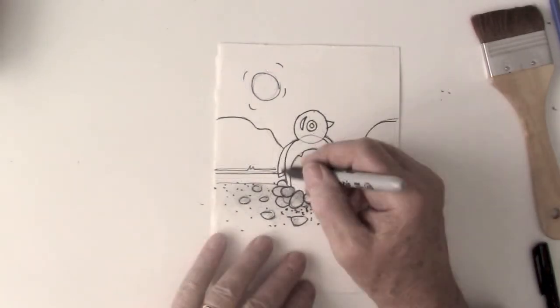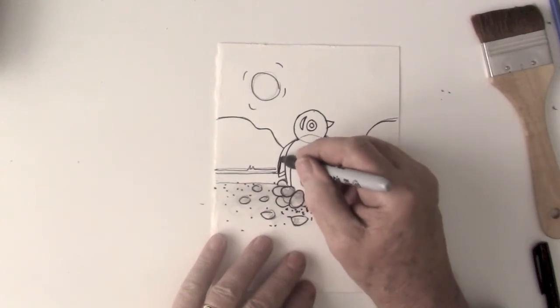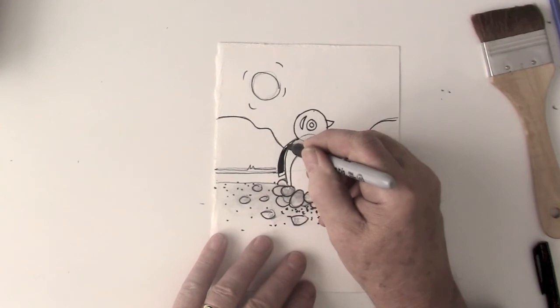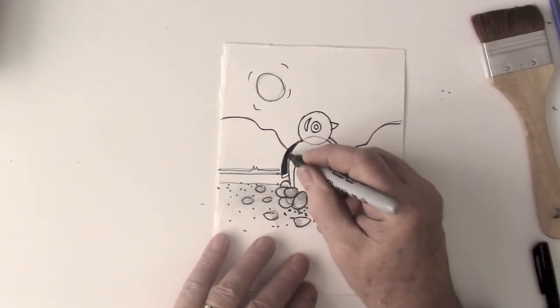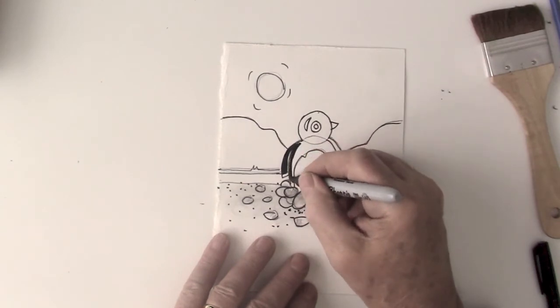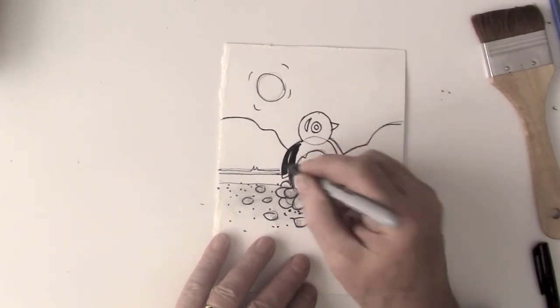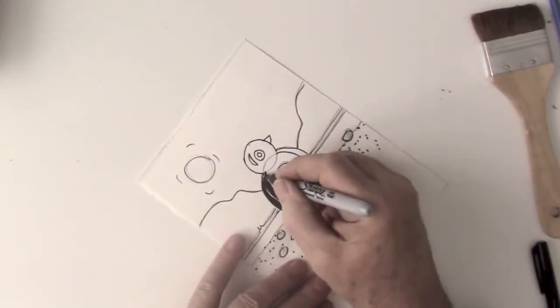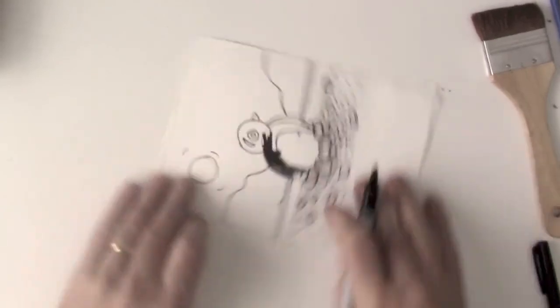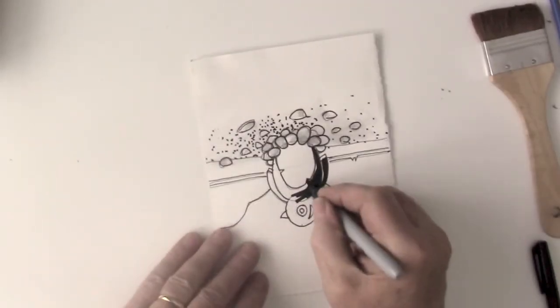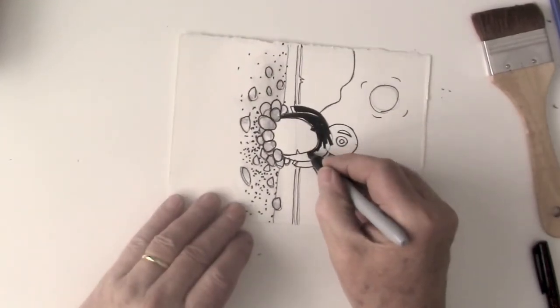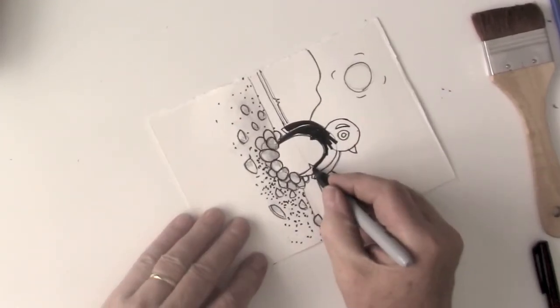The next step is to take your sharpie and carefully make the penguin black but leave a little white line between the body and the wing which is right there. The head, everything gets filled in because obviously the head is in the body. And I'm turning the paper so that I can keep my pen pointing at the edge that I'm filling in.